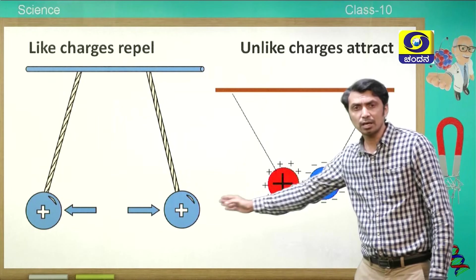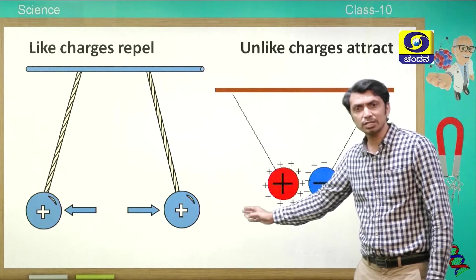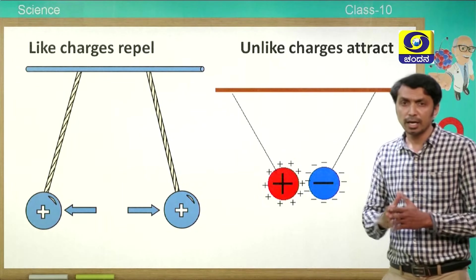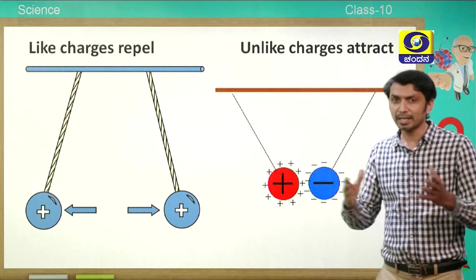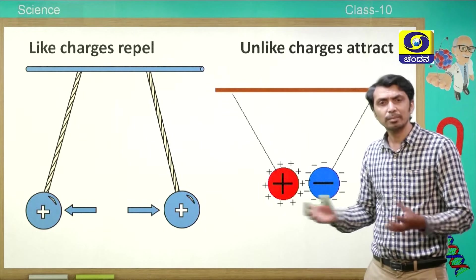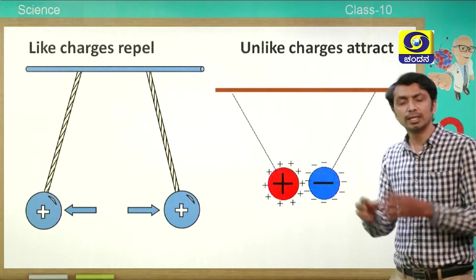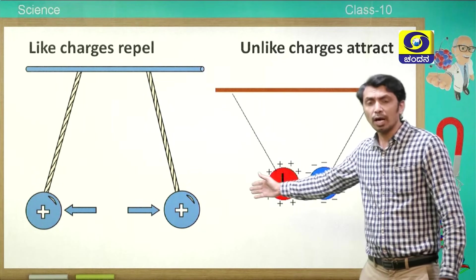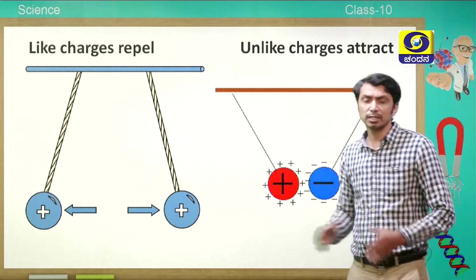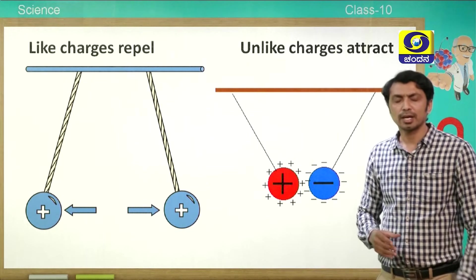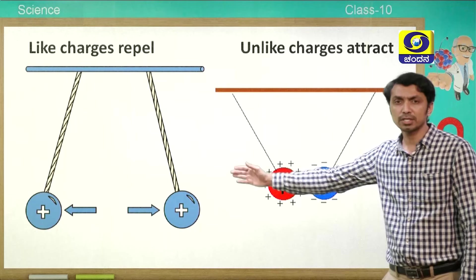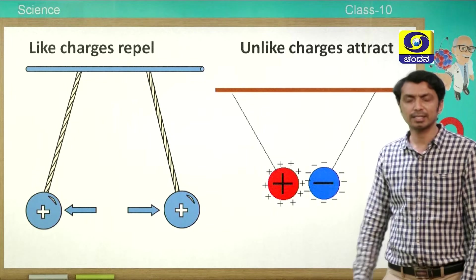When the charges are the same — like charges — they repel. When the charges are unlike, they attract. Just as with magnets, when you bring a north pole near a north pole, they repel. In the same way, if you put two negative charges near each other, they will also repel. So: like charges repel each other, and unlike charges attract each other.